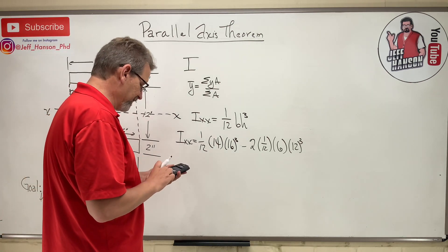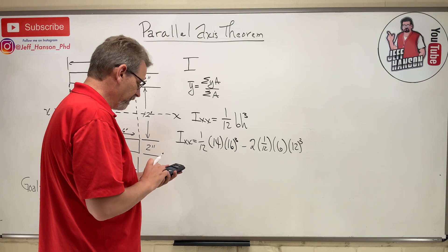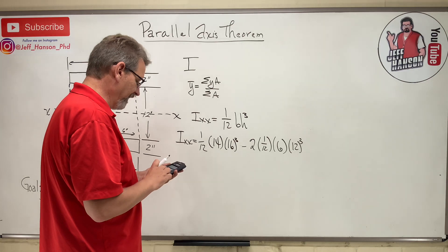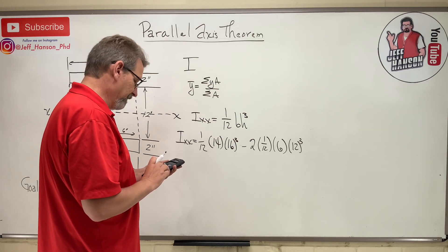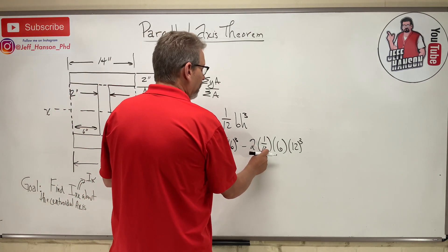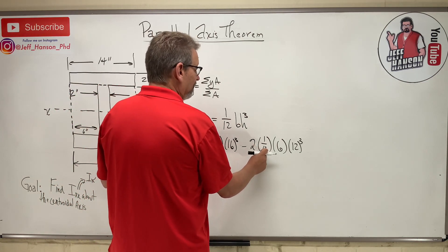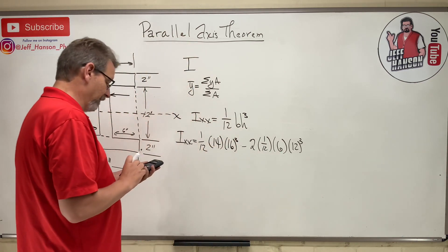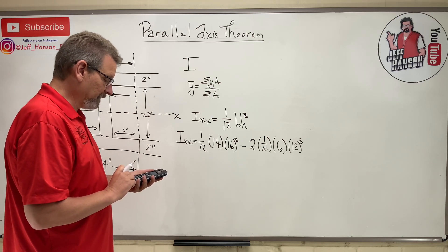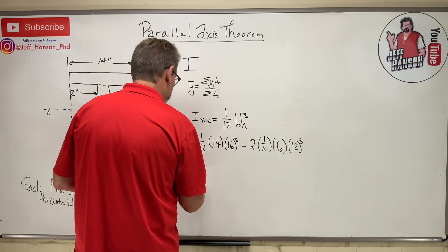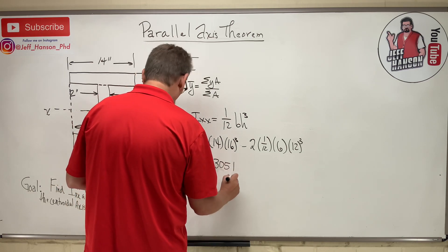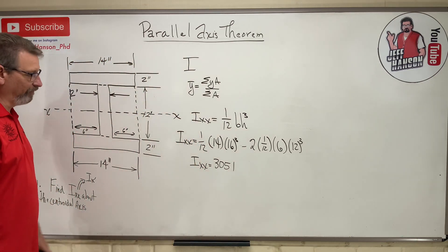Here we go. We got 14 times 16 cubed, and then all of that divided by 12, and then minus, let's see, 2 in there leaves a 1/6th, and then that 6 and that 6 cancel out, so just minus 12 cubed, because math. Enter. This equals 3051.